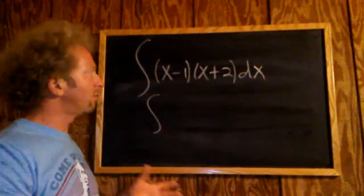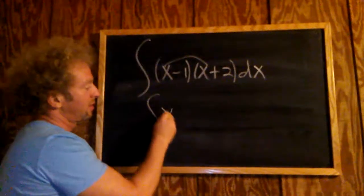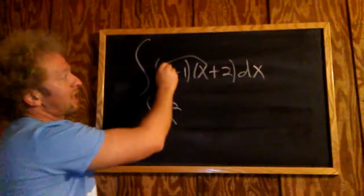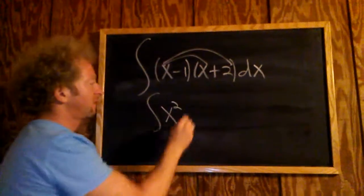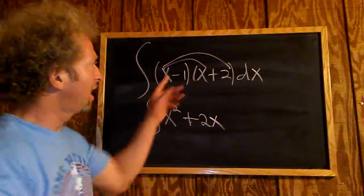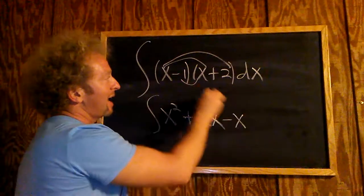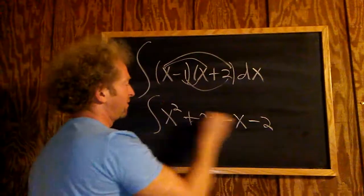So we have the integral, and what we'll do is just distribute. So x times x is going to give us x squared. And then x times 2 will give us 2x. And then negative 1 times x is negative x, and negative 1 times 2 is negative 2.